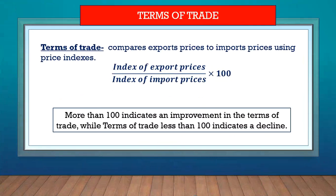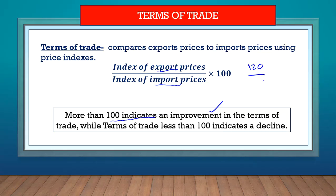Terms of trade compares export prices and import prices using indexes. The index for export prices is placed at the numerator and import prices at the denominator, then you multiply by 100. If the terms of trade result is more than 100, there is an improvement — that's good. If it's less than 100, the terms of trade have declined. For example, if the index of export prices is 120 and the index of import prices is 90, you multiply by 100 and get 133, which is more than 100, indicating the terms of trade have improved.